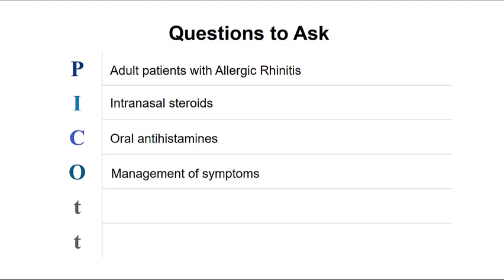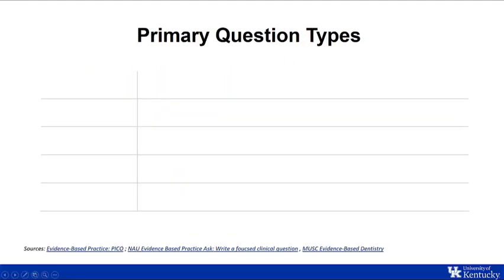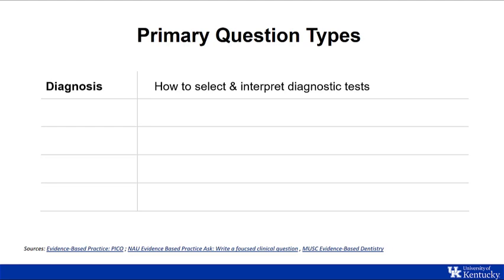The optional T's that can be added to the end of PICO stand for the type of question and the type of study, or even time. The first question type is diagnosis, which is defined as questions that help you select and interpret diagnostic tests. These tests will help you confirm or exclude a diagnosis. It includes areas such as specificity, sensitivity, expense, safety, and other factors.